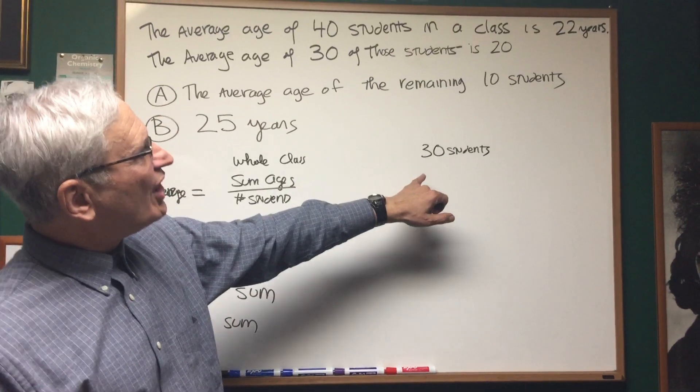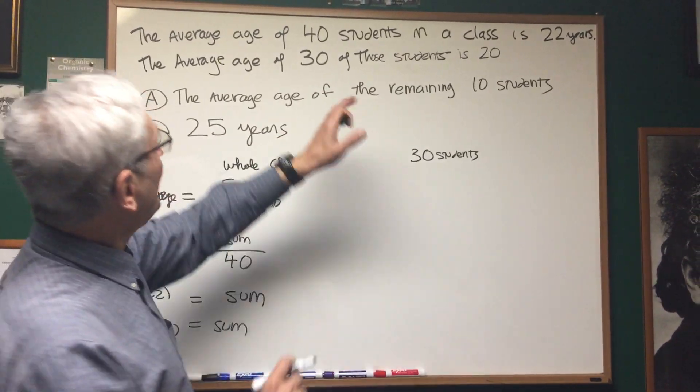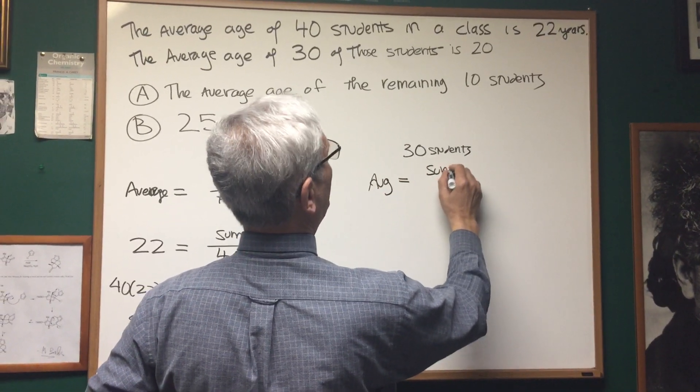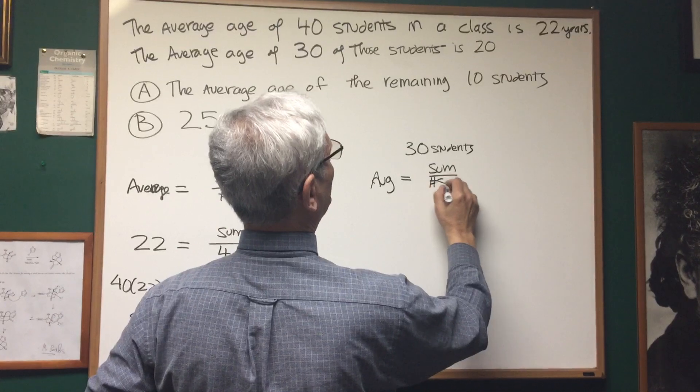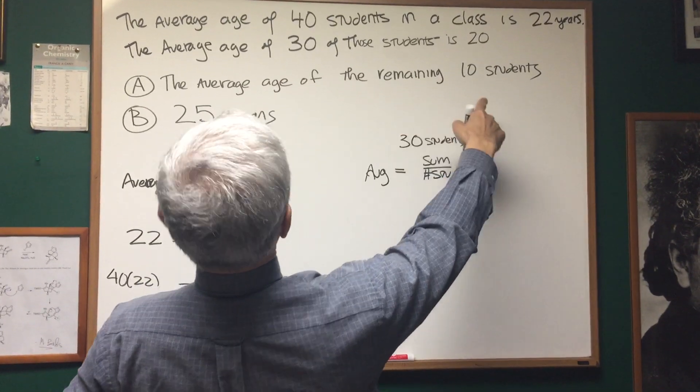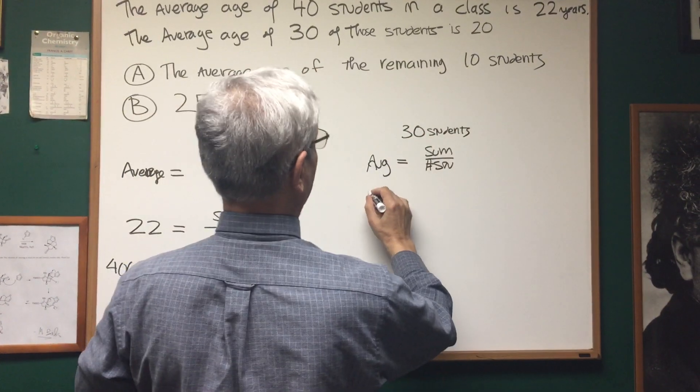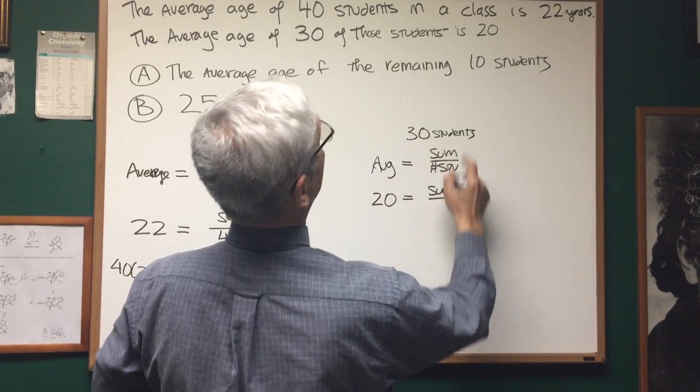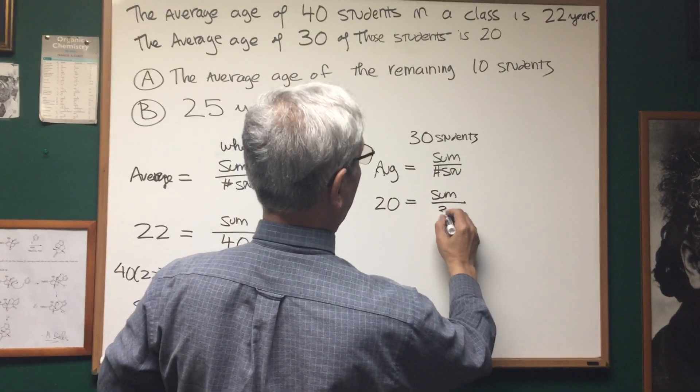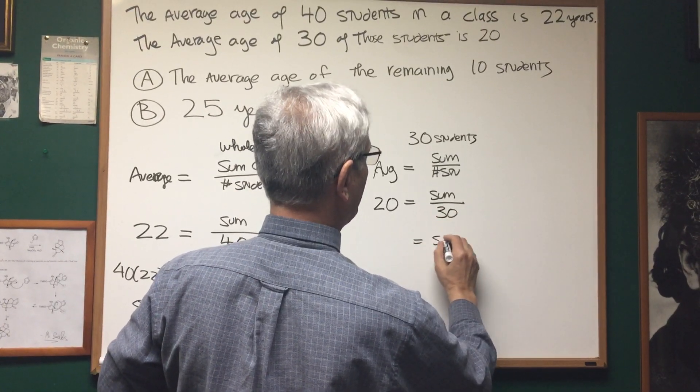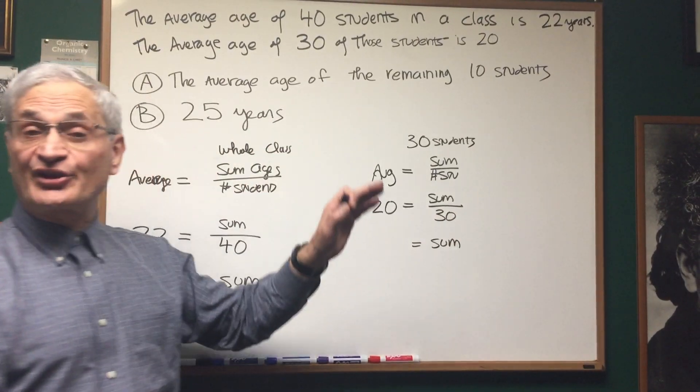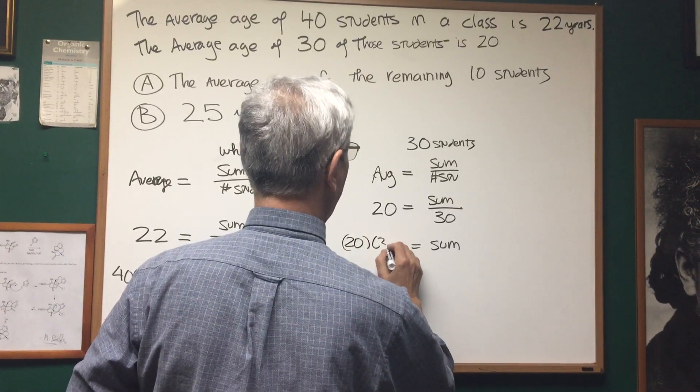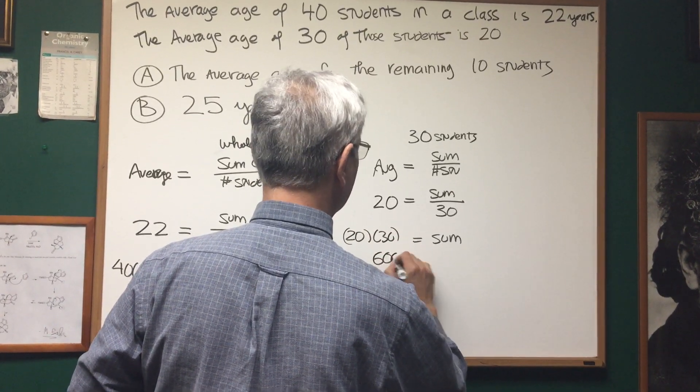Now let's focus on those 30 students that have been singled out. The average is the sum of the ages over the number of students. We're told that the average of the 30 students is 20. The number of students we know is 30. Therefore the sum of the ages of those 30 students is 20 times 30, or 600.